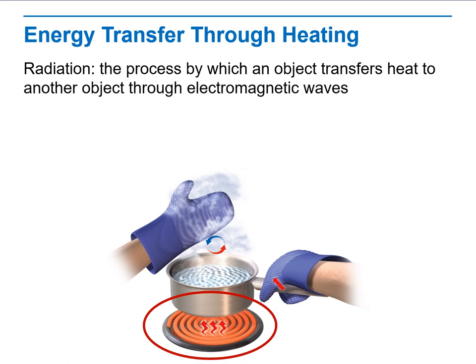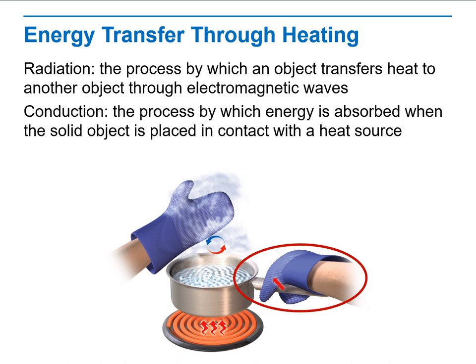Radiation — this is a heating oven. Radiation is the process by which objects transfer heat to another object through electromagnetic waves. So, radiation is about waves. Heat from the sun reaches us through radiation.